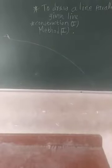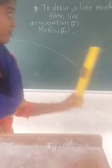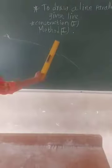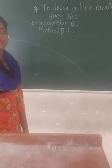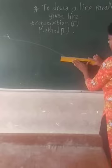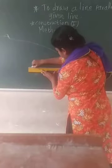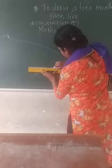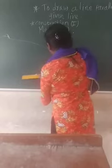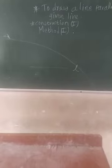So first we see the first type of construction, where suppose line L is given. For that line we have to draw a parallel line. This is your line L, and we have to draw a parallel line to it.